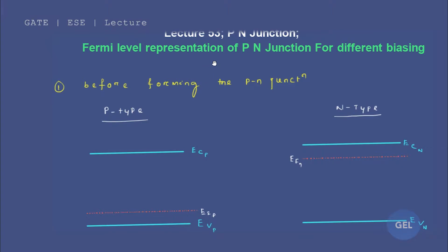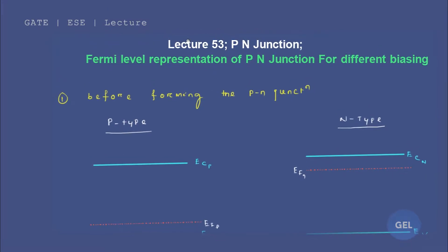Hi, welcome to GATE ESC lecture. We are in lecture number 53 of the second module, that is PN Junction. This is a very important subject — extremely important for your GATE and ESC exam, and mostly for ISRO exams also. Today's topic is Fermi level representation of PN Junction.